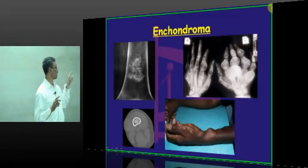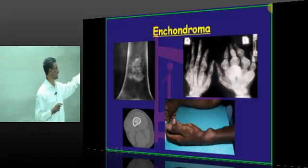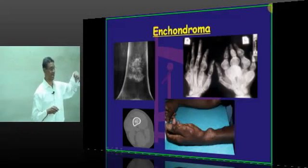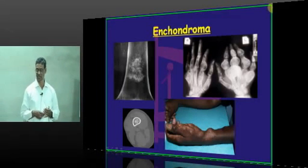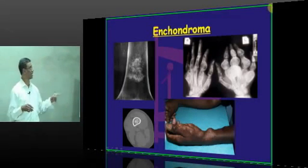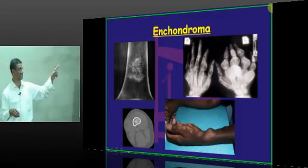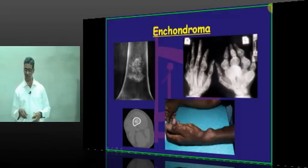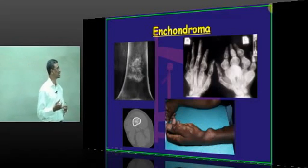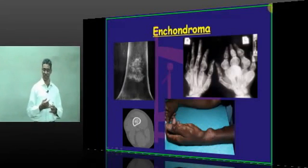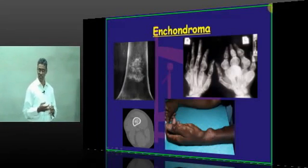Enchondroma is inside the medullary cavity. Hands and feet are the common areas - short bones are affected. Phalanges are the most affected bones, and there are two conditions associated with Enchondroma.